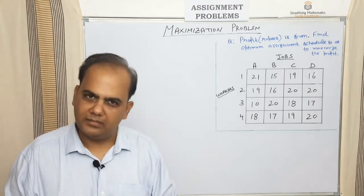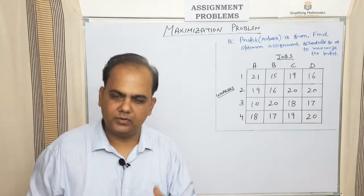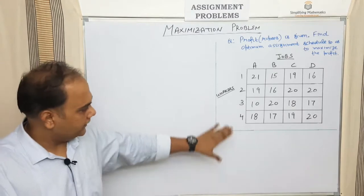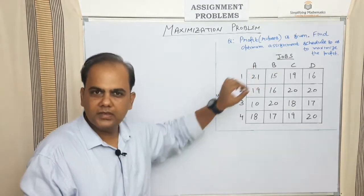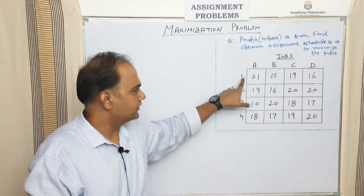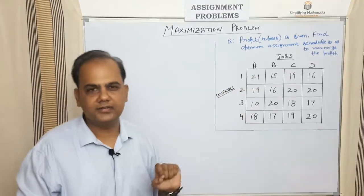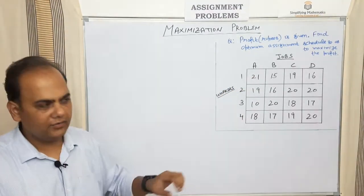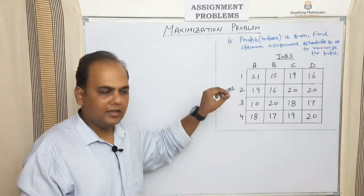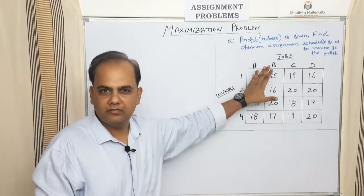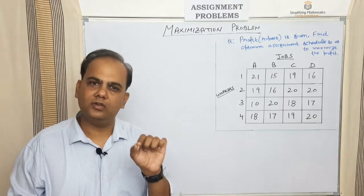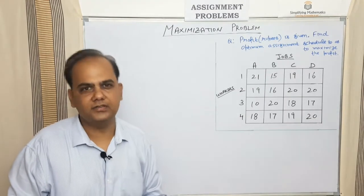When the objective function is of maximization type, consider this example: there are four workers and four jobs. When a job is assigned to a worker, the profit is given — for example, 21 is the profit for one assignment. You have to find the optimum assignment schedule: which worker should be given which job so that the objective function, which is to maximize the total profit, is achieved.